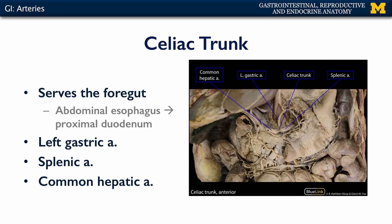Let's take a look at the celiac trunk and its branches. There are three major branches: the smallest is the left gastric, which serves the lesser curvature of the stomach and ultimately anastomoses with the right gastric branch from the common hepatic artery. There's also the splenic artery, which goes to the spleen. And then there's the common hepatic artery, the other major branch, which ultimately serves the liver, gallbladder, duodenum, and portions of the pancreas.